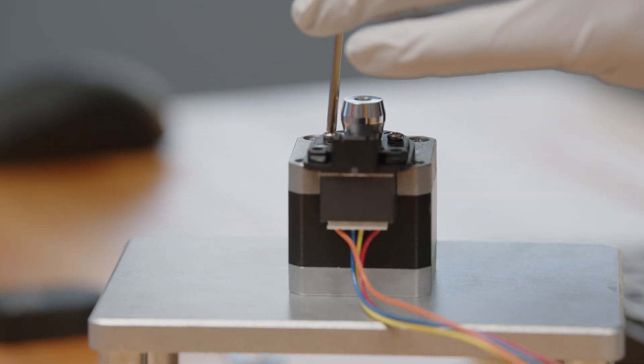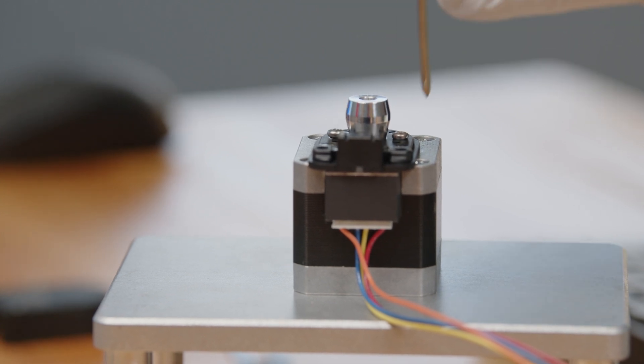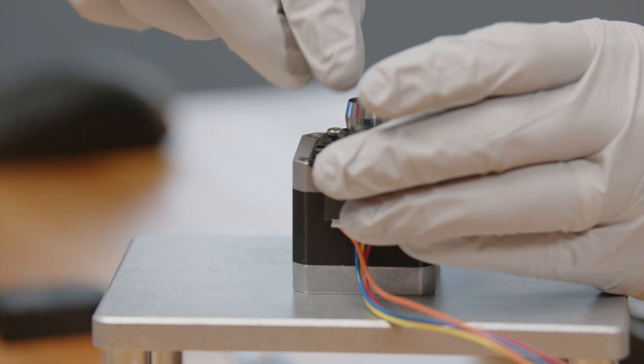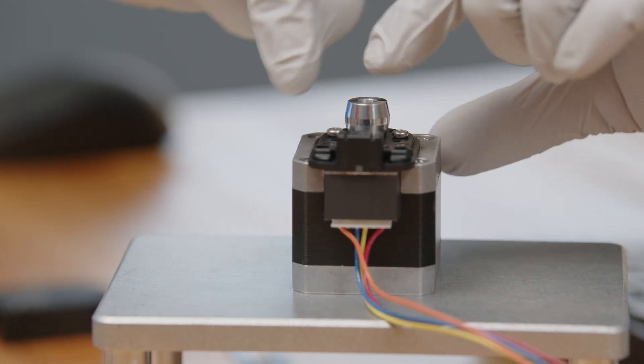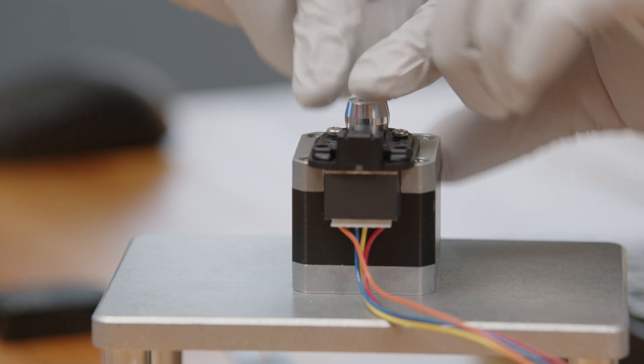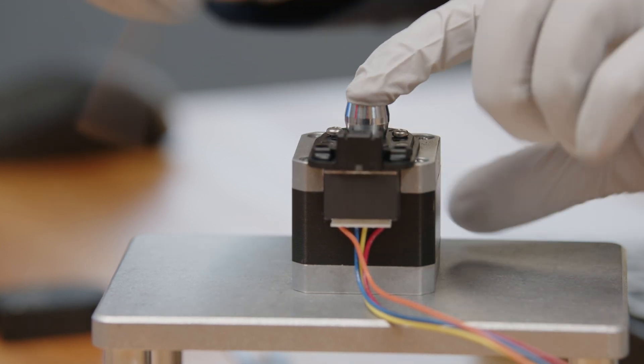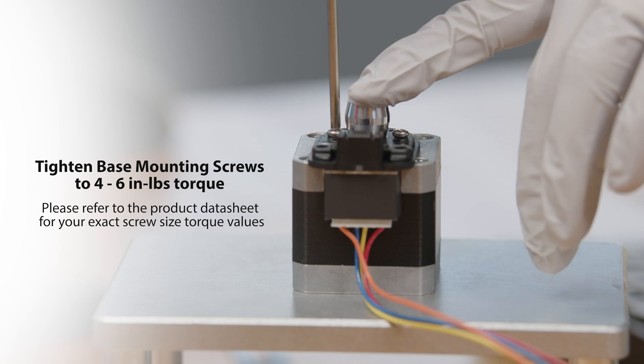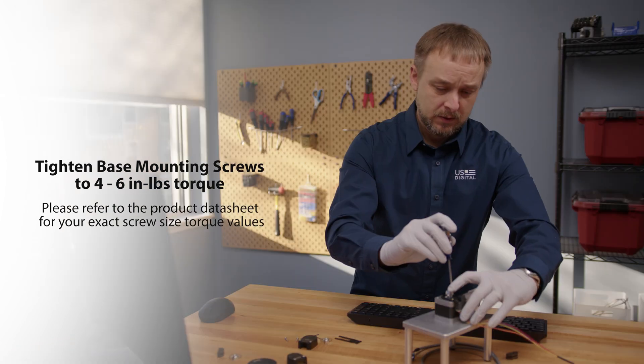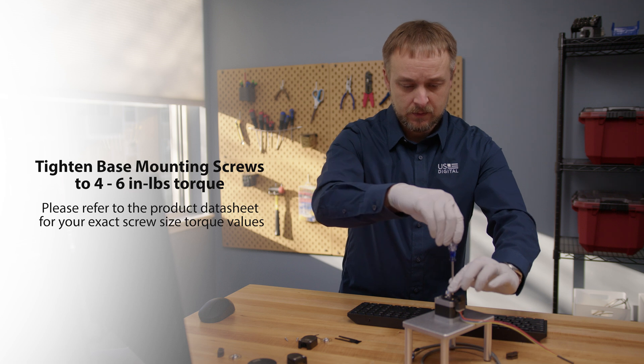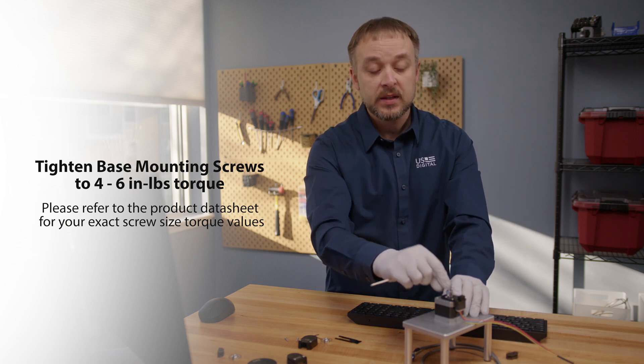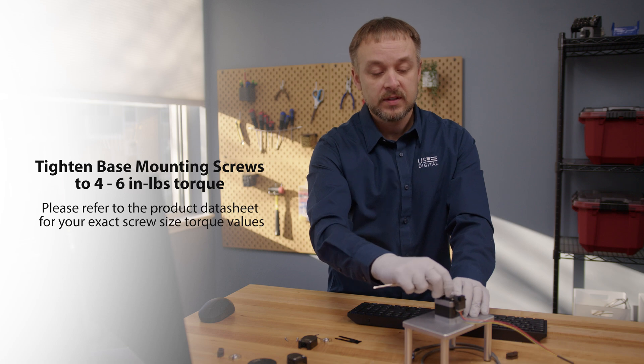So we're going to loosen these screws up just a little bit. And then that centering tool will now fit down the taper inside that center hole there. And we can put some firm pressure on that base while we tighten these screws up. So now our mounting base is properly centered to this shaft using that tool.